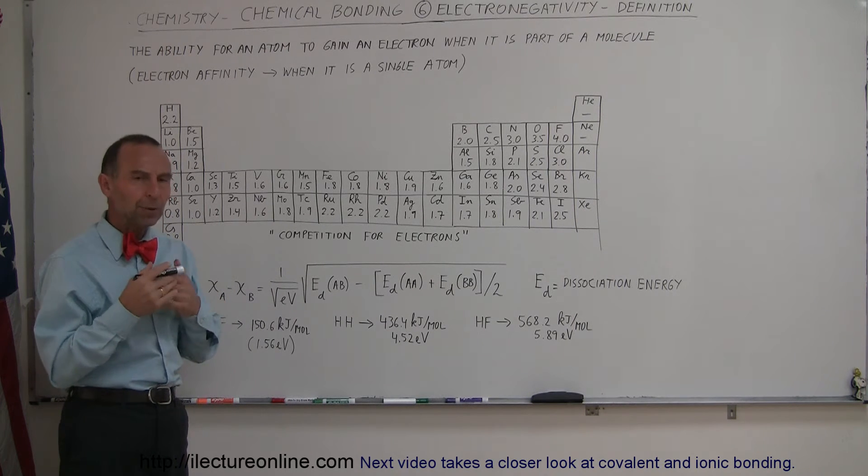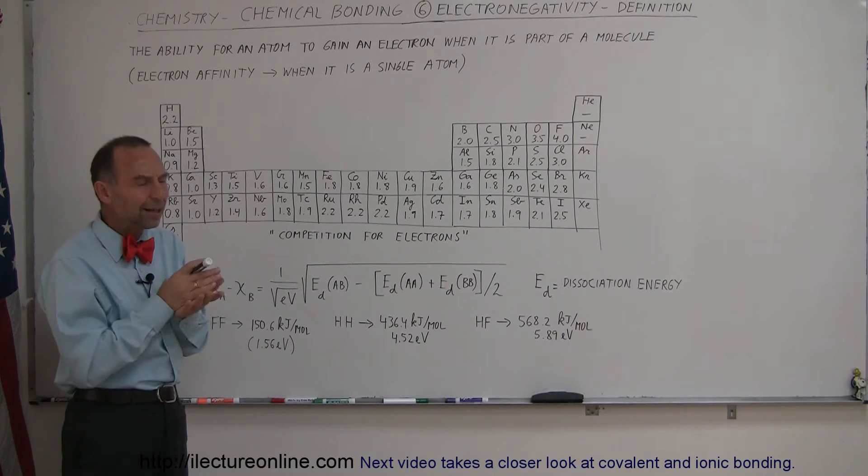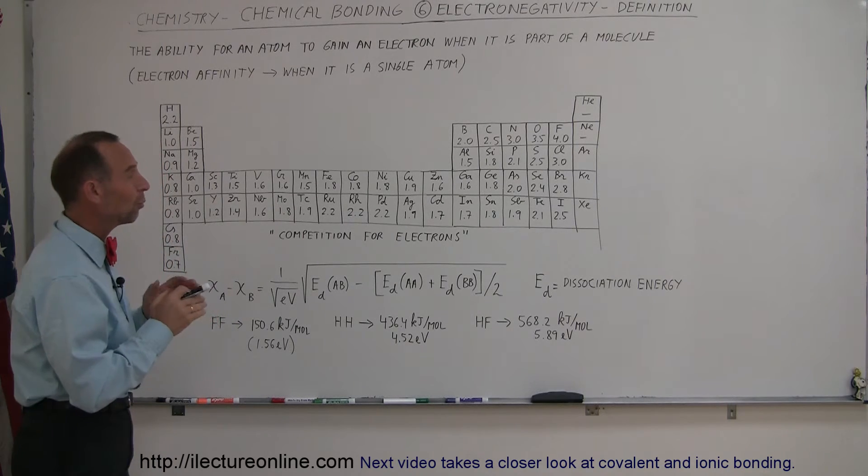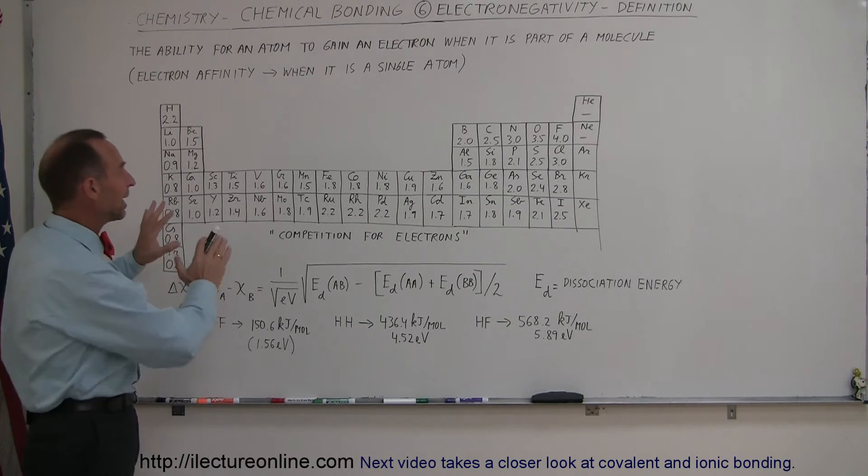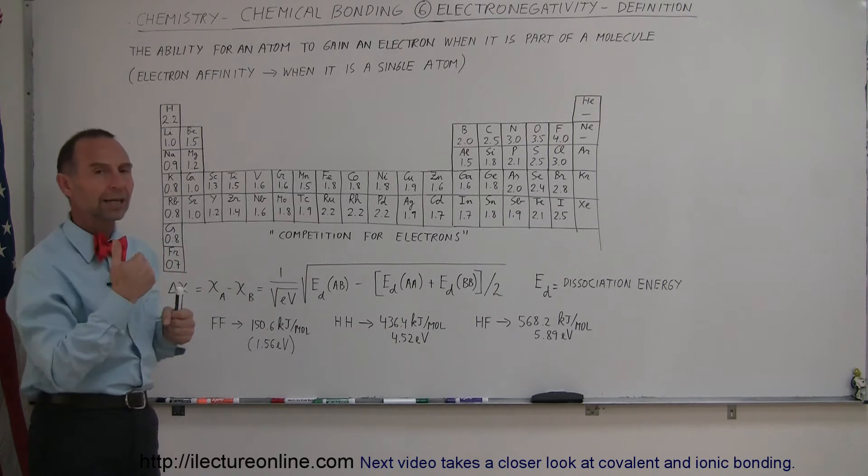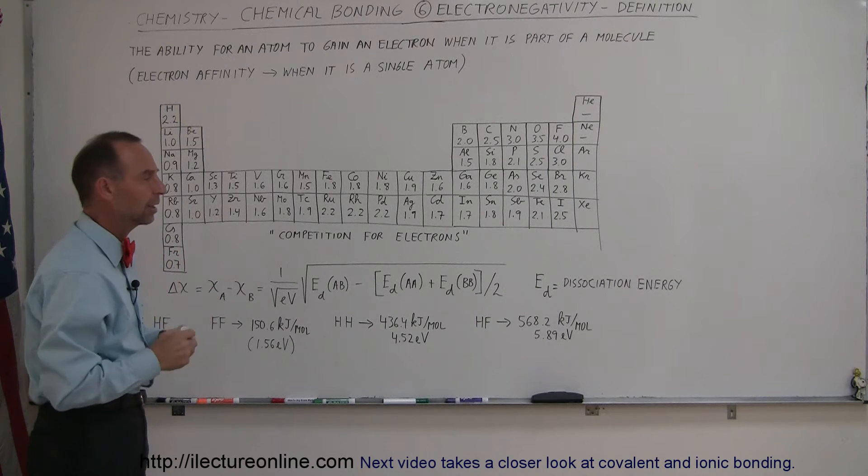So a number of people have come up with various ways in which to calculate the electronegativity, and none is a perfect method. Most of them are very good methods. And so what we've come to now is a table, like a periodic table, where over the years we've been able to attribute an electronegativity to each of the atoms by doing various tests and various calculations.